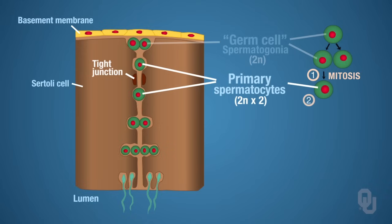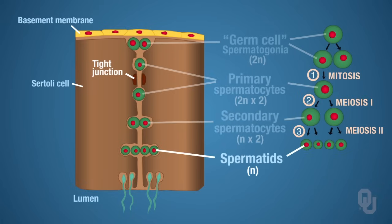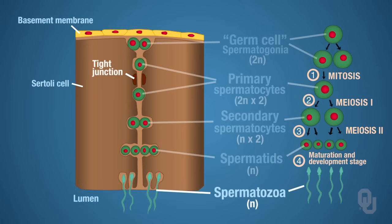Primary spermatocytes then undergo meiosis I. When they undergo meiosis I, they're going to produce secondary spermatocytes. Secondary spermatocytes are haploid, so they are 1N. Secondary spermatocytes then undergo meiosis II to become spermatids. Spermatids then undergo a maturation and development stage to become spermatozoa, also known as sperm.